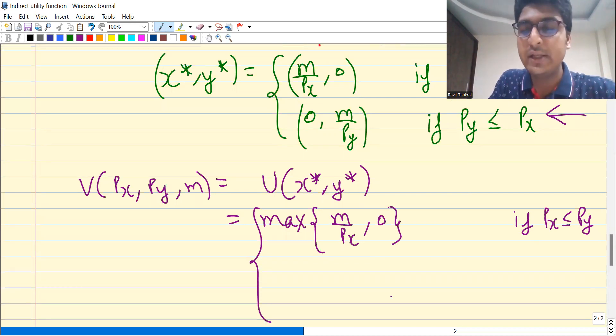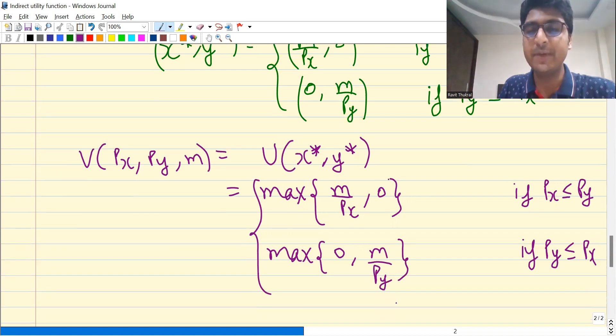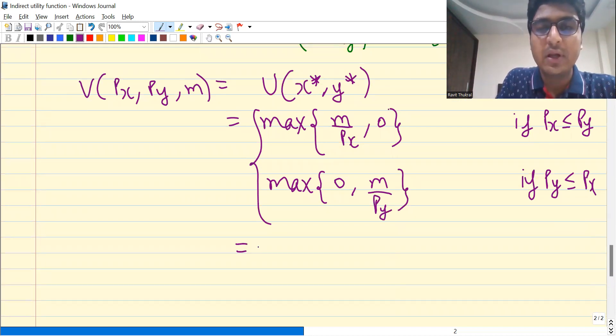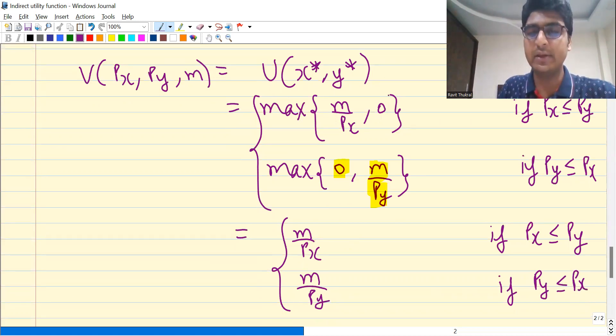And in case of second case where Py is less than Px, I will get max of zero, m by Py. So this will give me max of m by Px and zero will be m by Px, assuming that income and prices are positive. So I'll get this if Px is less than equal to Py. And similarly, max of zero and m by Py will be equal to m by Py when Py is less than equal to Px.